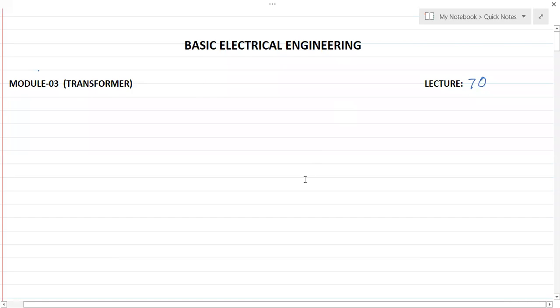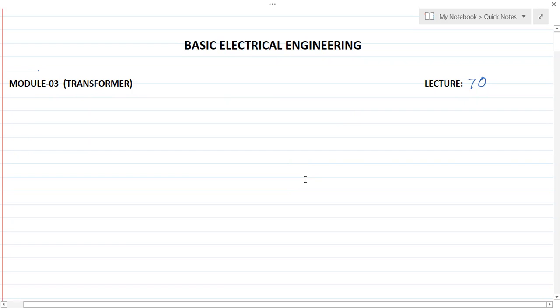Hello everyone, welcome back to the online lectures of Basic Electrical Engineering. This is lecture number 70, Module 3 - Transformer. In the last video, the 69th video, we discussed the practical transformer where we considered a transformer without any winding resistance and leakage flux.